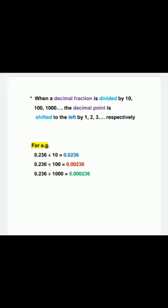When a decimal fraction is divided by 10, 100, 1000 and so on, the decimal point is shifted to the left by 1, 2, 3 and so on places respectively. For example, 0.236 divided by 10 equals 0.0236; 0.236 divided by 100 equals 0.00236; and 0.236 divided by 1000 equals 0.000236. So children, remember: when multiplying, shift the decimal point to the right; when dividing, shift it to the left.